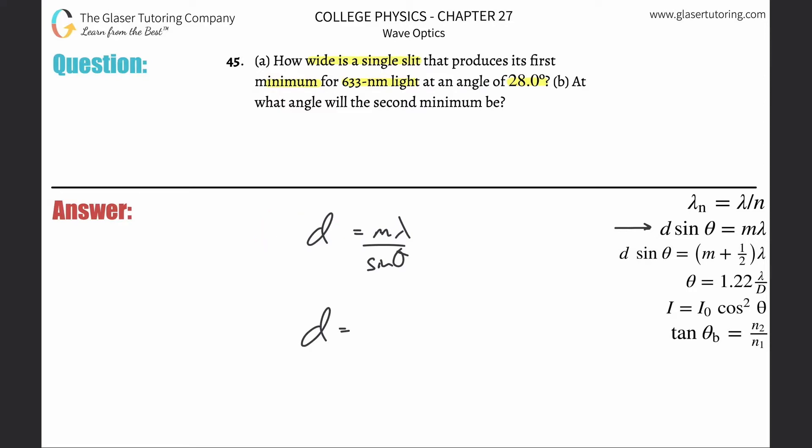So the M, it says the first minimum. Didn't highlight that, but that is important. Then multiplied by the wavelength here, they said the light is going to be 633 nanometers, but why don't we just convert that into meters? And then divide that all by the sine of the angle. Well, they gave us the angle, so very good.